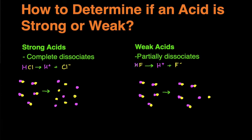On the other side, we have HF, which is a weak acid. Of the five molecules, only one of the molecules broke up, and the remaining four stay together. So this is a weak acid because it partially dissociated versus strong acid, which completely dissociated.